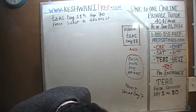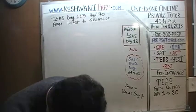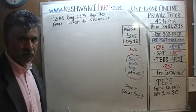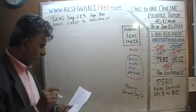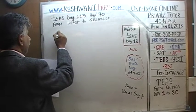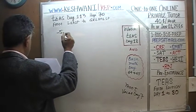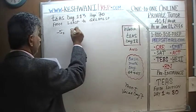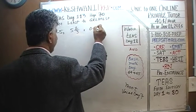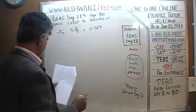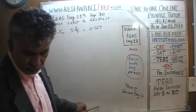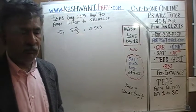In the first problem, they are asking us to write in increasing order, which is the same as saying least to greatest. Increasing order means start from the smallest and go to the biggest. The numbers that are given to us are negative 5, 5 and 2 thirds, and 0.523. The simplest, quickest, and most economical way to tackle this is to simply arrange them on a number line.